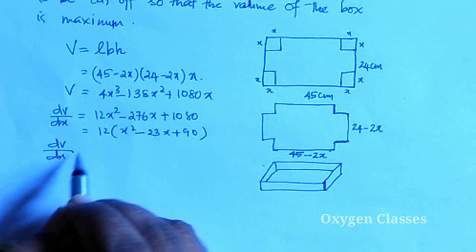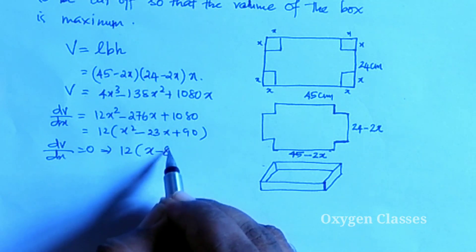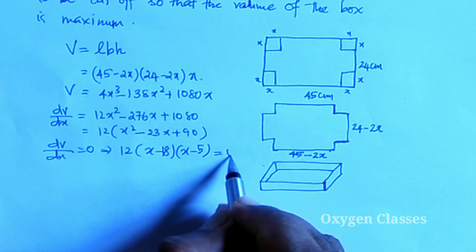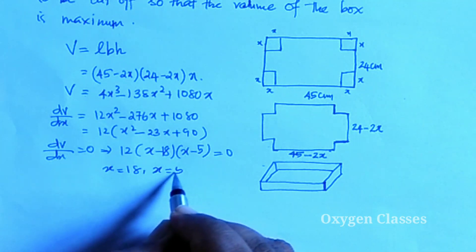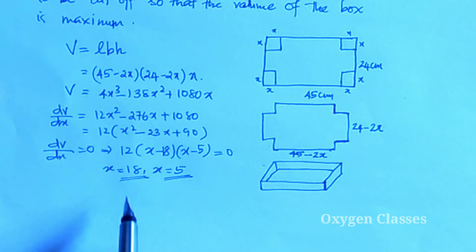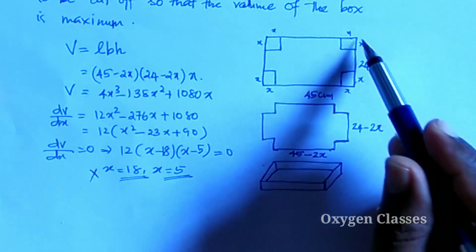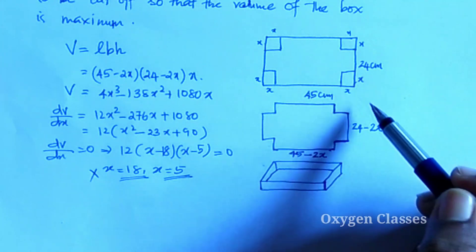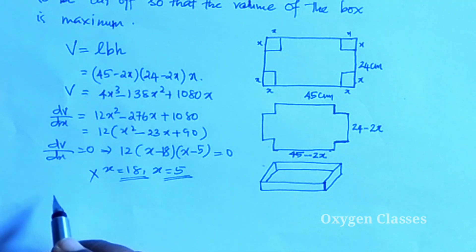Setting dV/dx = 0: 12(x − 18)(x − 5) = 0, giving x = 18 or x = 5. We reject x = 18 as a critical point because 24 − 2(18) would be negative, which is not valid. So the relevant critical point is x = 5.